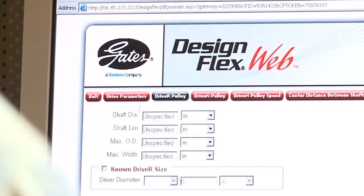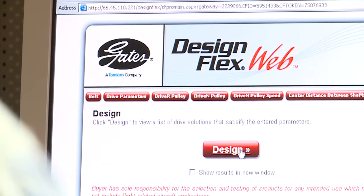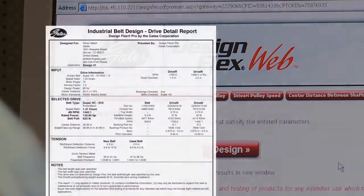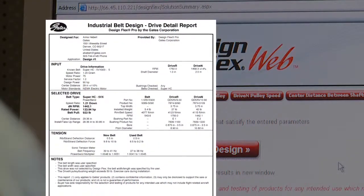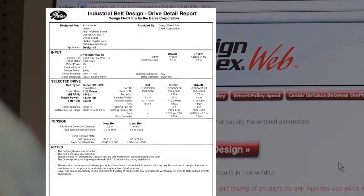For example, let's assume you have a 5VX 900 belt, which is a Super HC Molded Notch V-Belt 90 inches long. We enter drive parameters into DesignFlex web located at gates.com/drivedesign. Based on the drive detail report, the recommended deflection force is between 9.8 to 10 pounds.